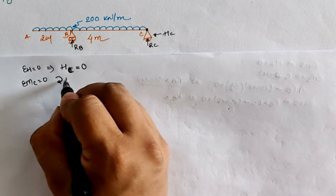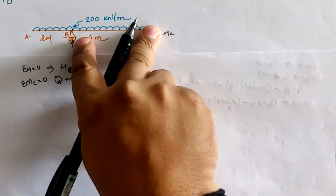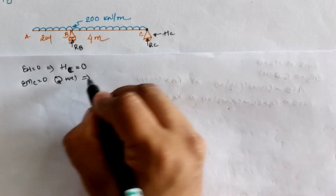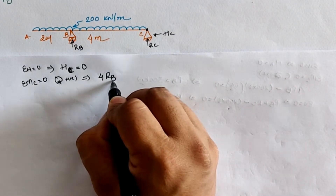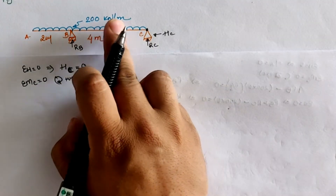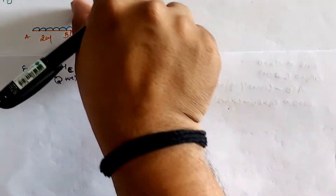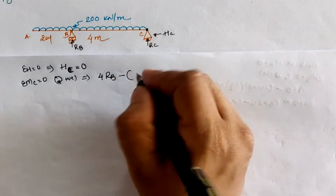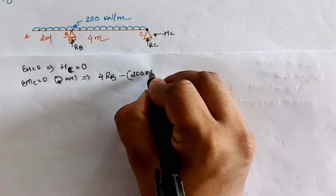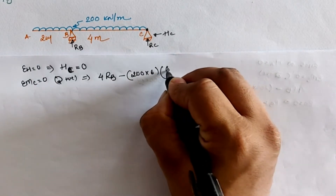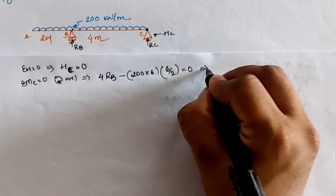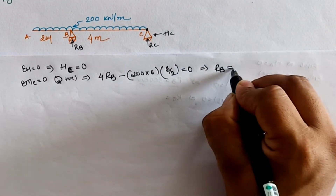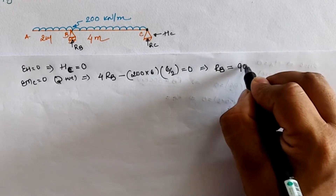Taking moment at location C, and treating clockwise as positive: RB in the upward direction creates a clockwise moment, so it is positive; 200 kN/m UDL creates an anti-clockwise moment, so it is negative — 200 × 6 × (6/2) = 0. Solving, we get the reaction at B, RB = 900 kN.